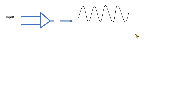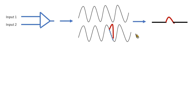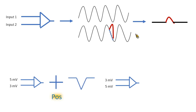The electrode includes two inputs: input 1 and input 2. The final EEG signal we see on the EEG monitor is the difference between input 1 and input 2. Thus, we can record a positive potential and a negative potential. We define positive potential as a downward wave and negative potential as an upward wave.